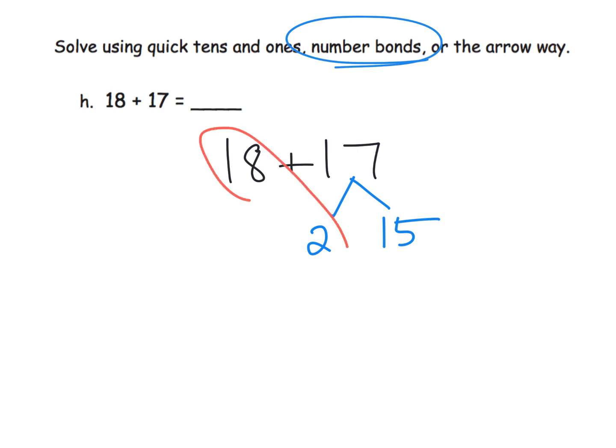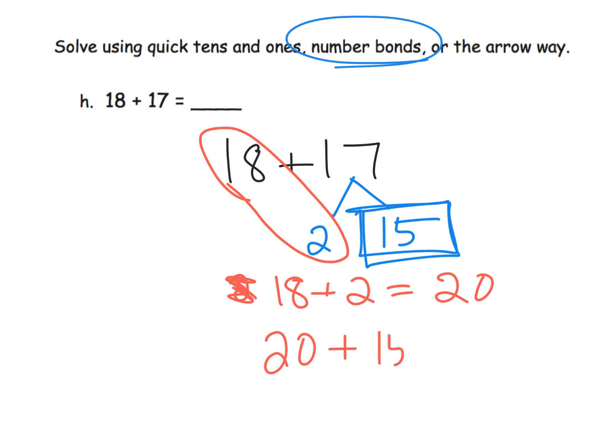And so now there is our next 10. So I'm going to do 18 plus 2, that gives me 20. And I'm going to take that 20 and I'm going to add in this 15 that's still sitting out there. So 20 plus 15, and I get the answer of 35.